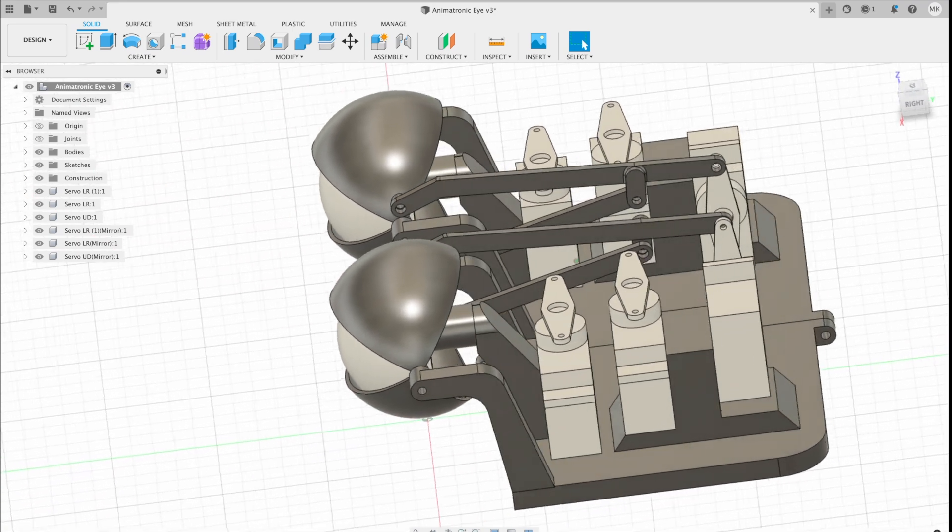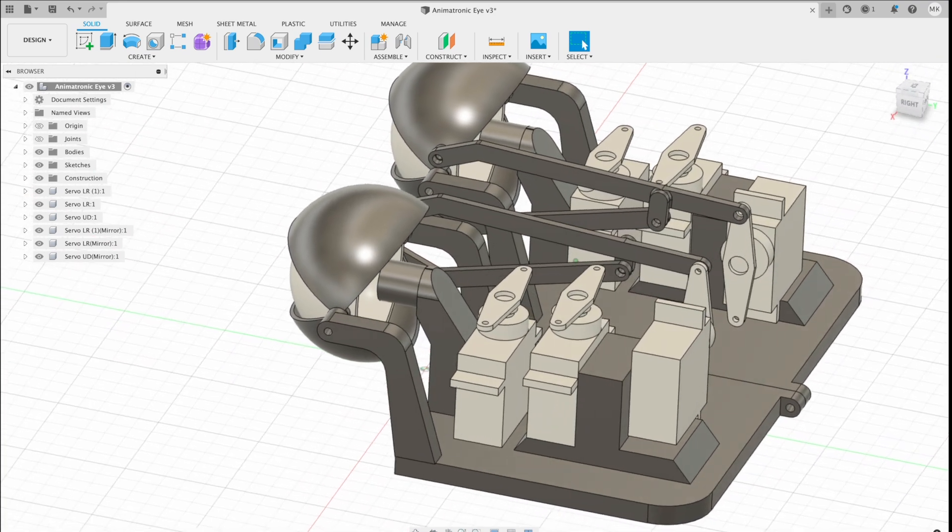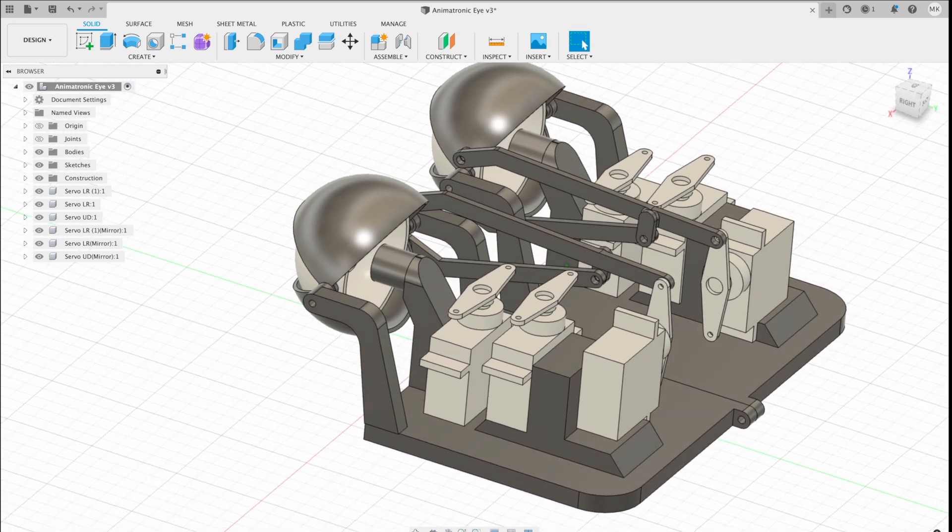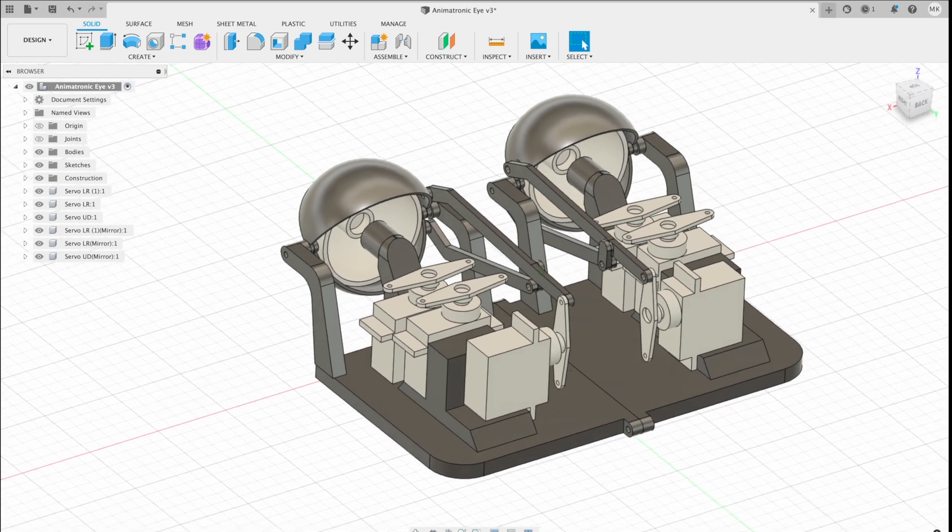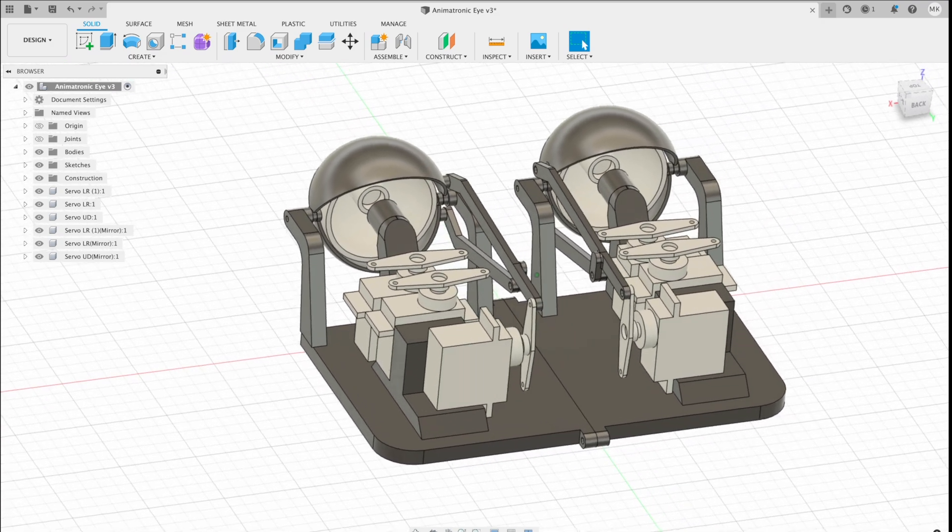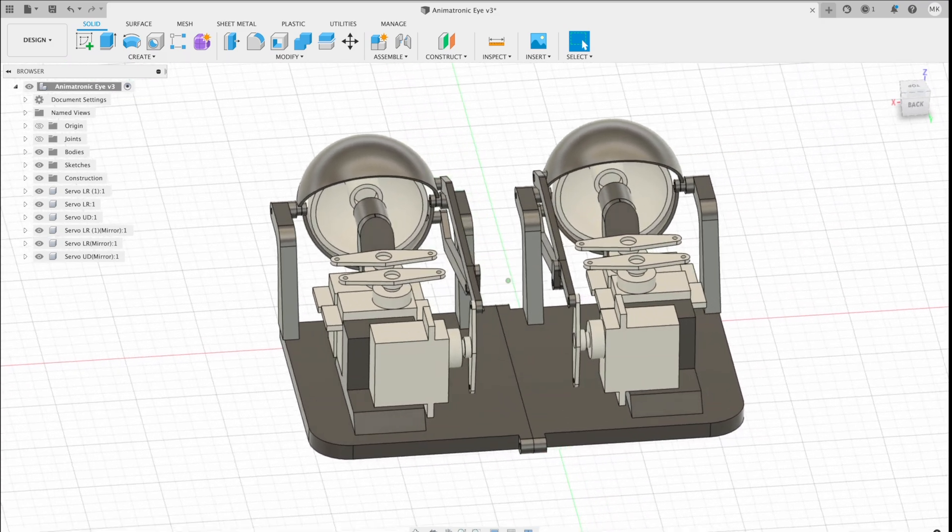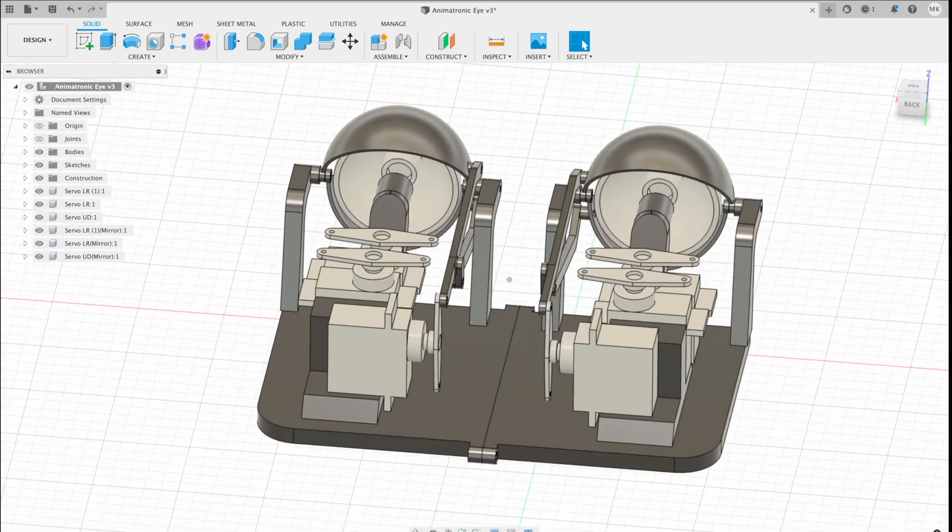I also wanted to have eyelids that could blink, and in future maybe wink independently, so I needed another two servos for those. At the center of each eyeball is a small brass universal joint, and I'm going to use thread to connect each of the eyeballs to the servos, rather than using solid pushrods.